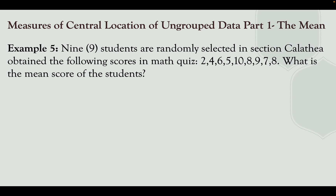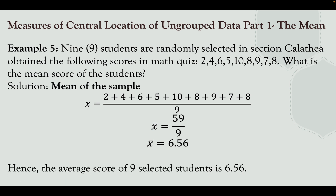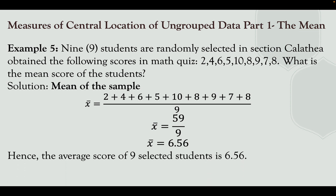Example 5: 9 students are randomly selected from section Katleya and obtained the following scores in a math quiz: 2, 4, 6, 5, 10, 8, 9, 7, 8. What is the mean of the scores? Since they are randomly selected, this is a sample mean. We compute (2+4+6+5+10+8+9+7+8) divided by 9, which is 59 ÷ 9 = 6.56. Hence, the average score of the 9 selected students in section Katleya is 6.56.